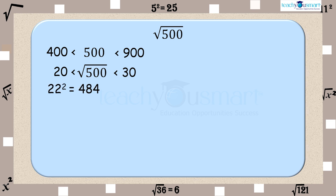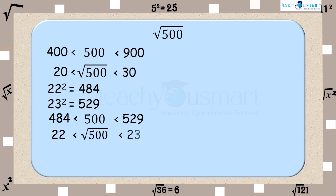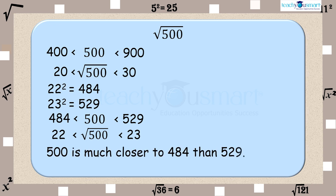But still we are not close to the square root of 500. We know 22² = 484 and 23² = 529, so 484 < 500 < 529, that is 22 < √500 < 23. Since 500 is closer to 484 than to 529, the square root of 500 is approximately 22.